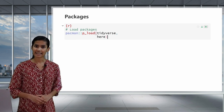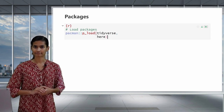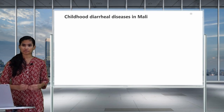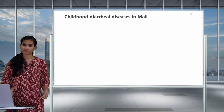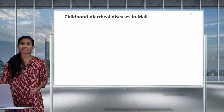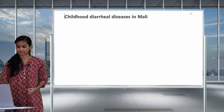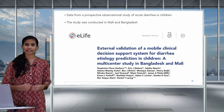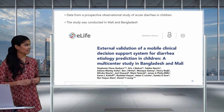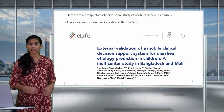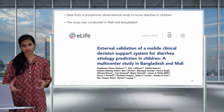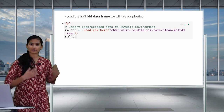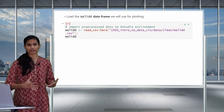Let's look at the data set that we will be using to plot in this lesson. The data we will be using for plotting today comes from a prospective observational study of acute diarrhea in children aged 0 to 59 months. These data were collected from Mali and Bangladesh and analyzed in this study. However, for today, we'll just be looking at the results from Mali. Now, let's load in our data set and look at the variables.